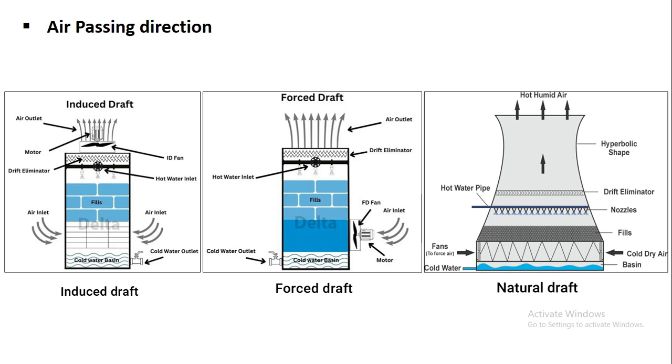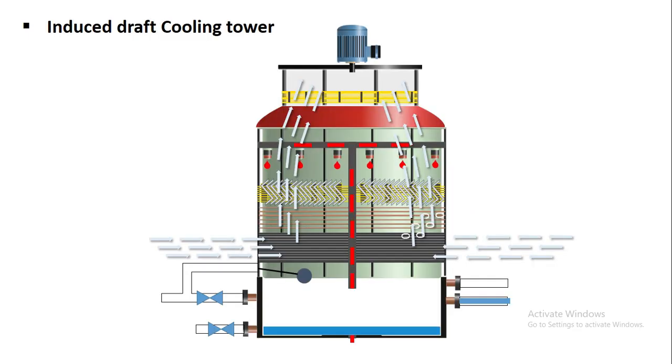As you can see in the extreme right is the enormous concrete natural draft towers used mainly in conjunction with nuclear power plants where the packing occupies only the bottom section and the rest of the tower has chimney to create the flow of air.